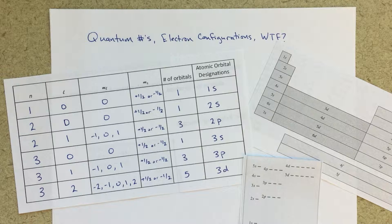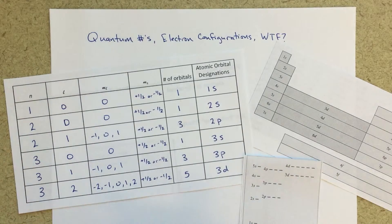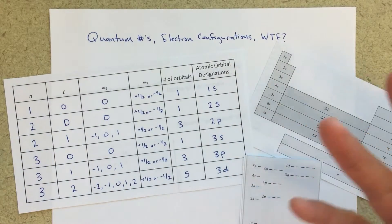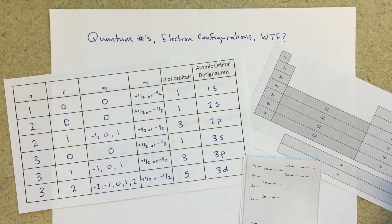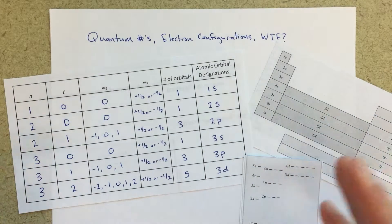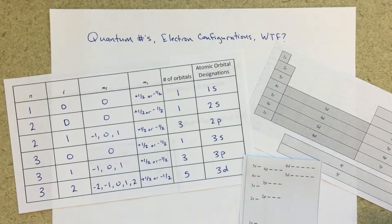Alright class, this video is going to be about quantum numbers and electron configurations — how they're related, how we can deal with them, what they really mean, and what we can do with them. I'm going to be talking about the different things, show some examples, but this is sort of an overview of how we put all this stuff together.